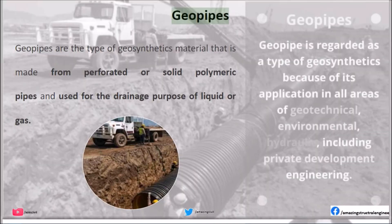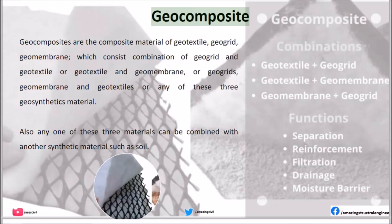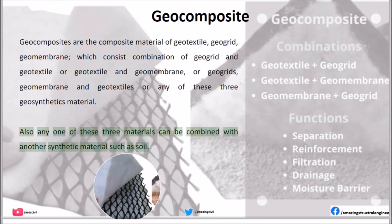Geopipe: Geopipes are the type of geosynthetics material made from perforated or solid polymeric pipes, and are used for the drainage of liquid or gas. Geocomposite: Geocomposites are composite materials consisting of geotextile, geogrid, and geomembrane, which can consist of a combination of geogrid and geotextile, or geotextile and geomembrane, or geogrid, geomembrane, and geotextile together. Also, any one of these three materials can be combined with another synthetic material such as soil.